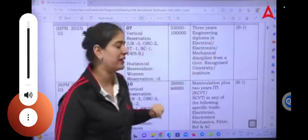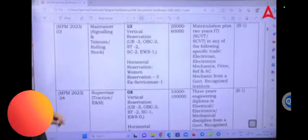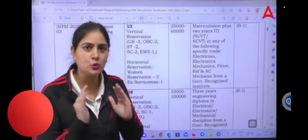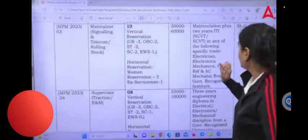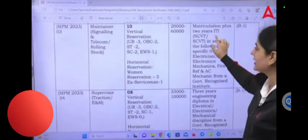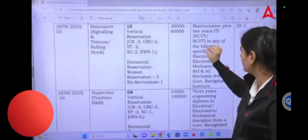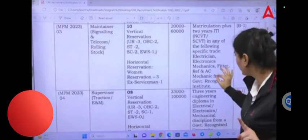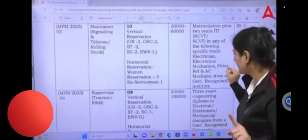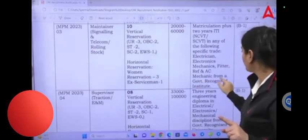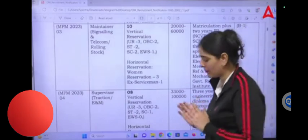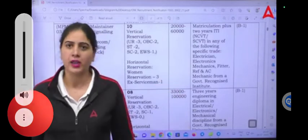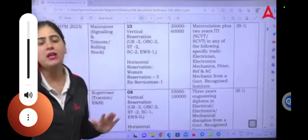The next post is Maintainer Signaling and Telecom Rolling with 10 posts at 20,000 salary. Listen to this carefully. You need 10th class with ITI from NCVT or SCVT in any of the following trades: electrician, electronics, mechanics, fitters, refrigeration and AC. Or refrigeration mechanics from government institute. If you've done 10th class in these particular trades—electrician, electronics, mechanics, fitters—then you can apply for this post.